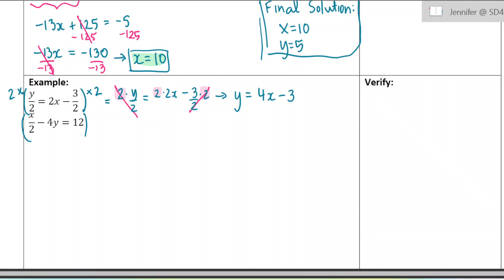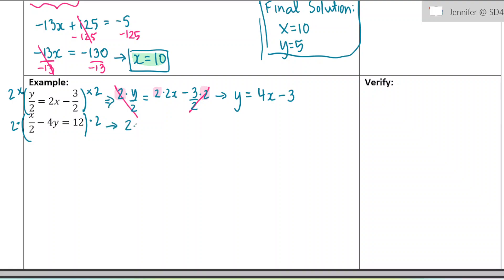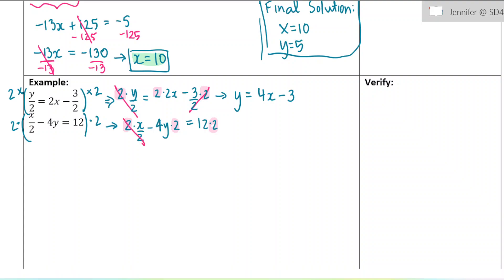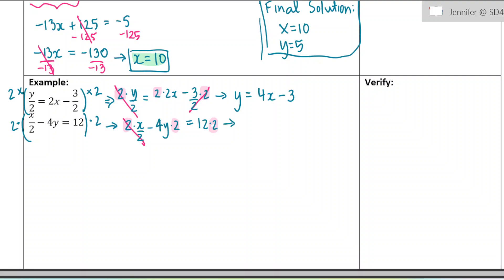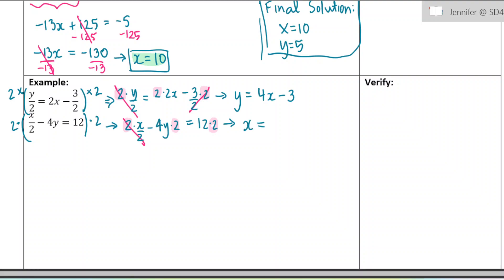We're going to use the same trick on the second equation — multiply everything by 2. So 2 times x over 2, minus 4y times 2, equals 12 times 2. Every single term gets multiplied by 2 and the fraction cancels out. That's why you choose 2 — because it was in the denominator. If you have multiple fractions with different denominators, choose a number that cancels all of them. We end up with x minus 8y equals 24. Now we can start with our substitution.